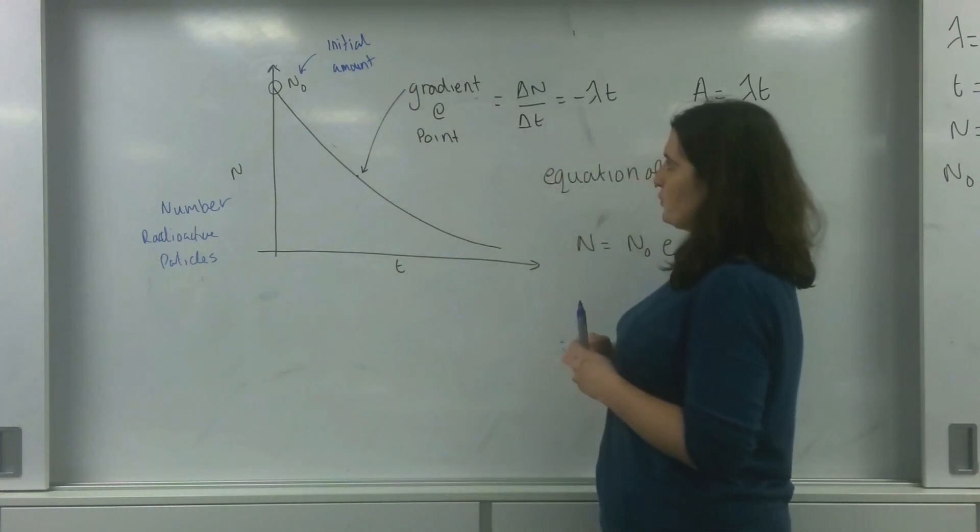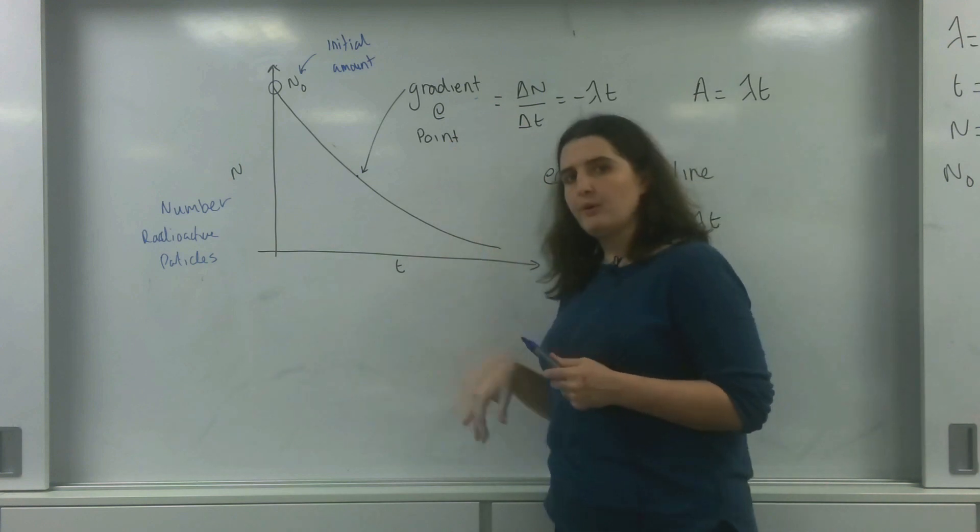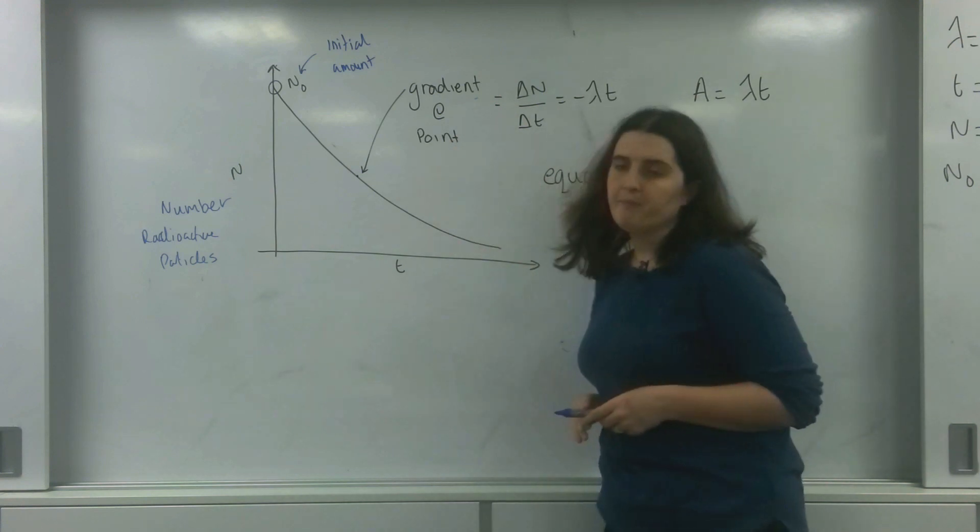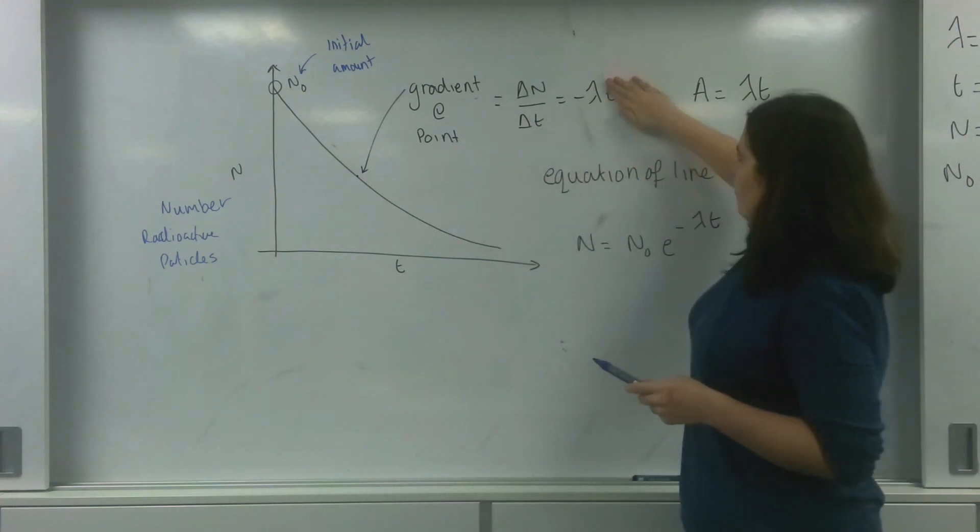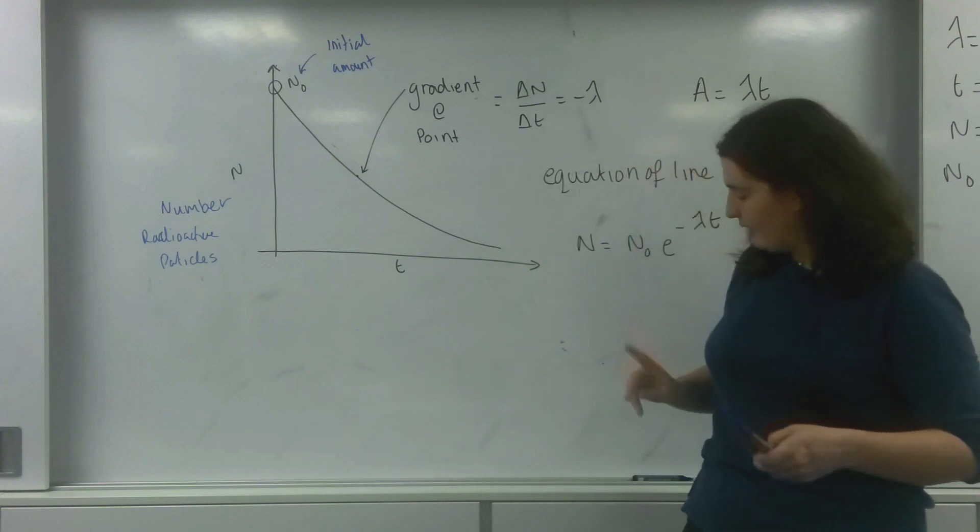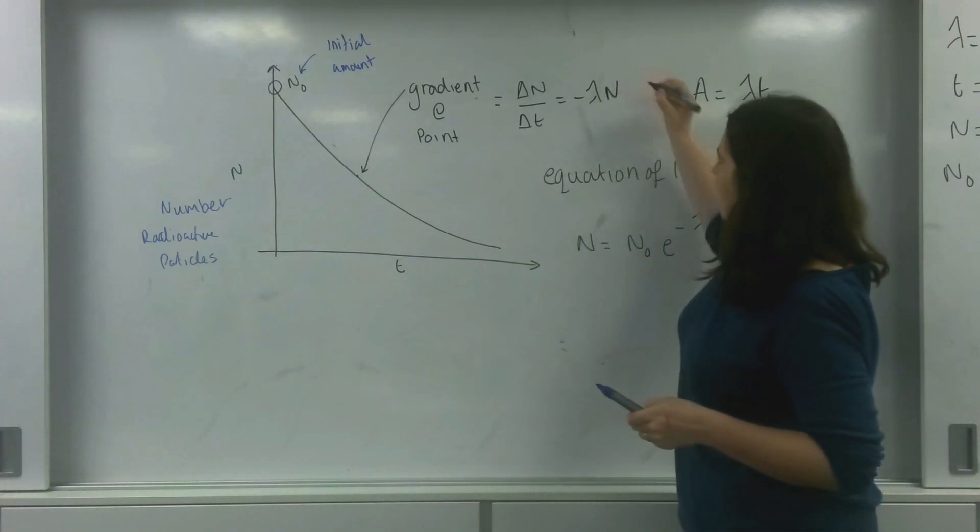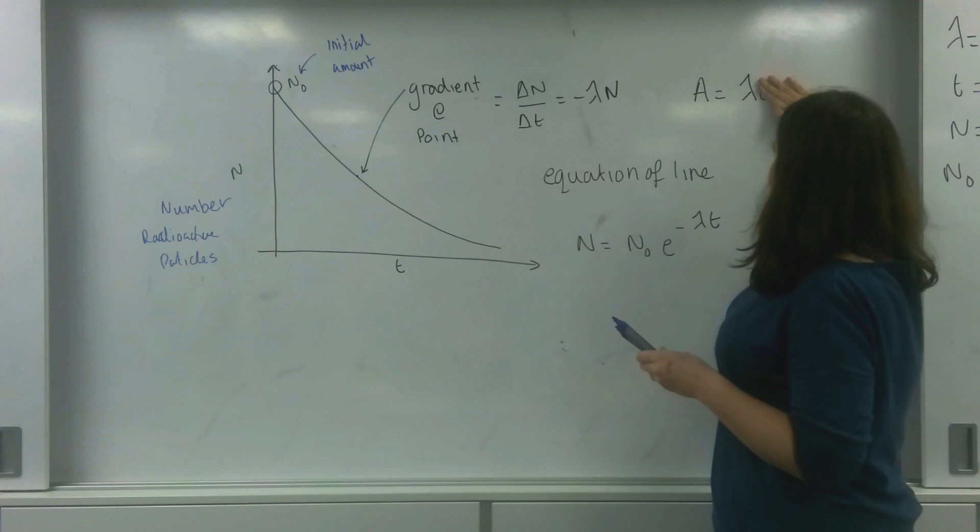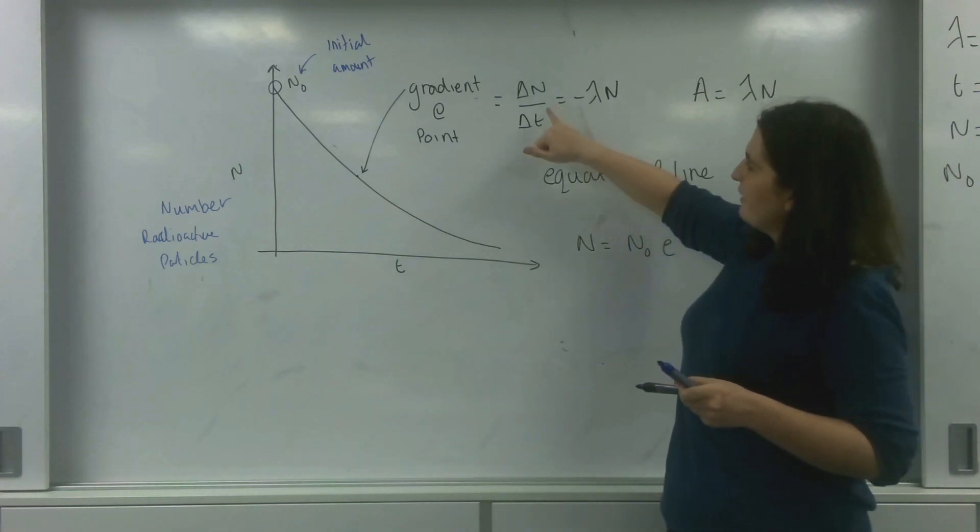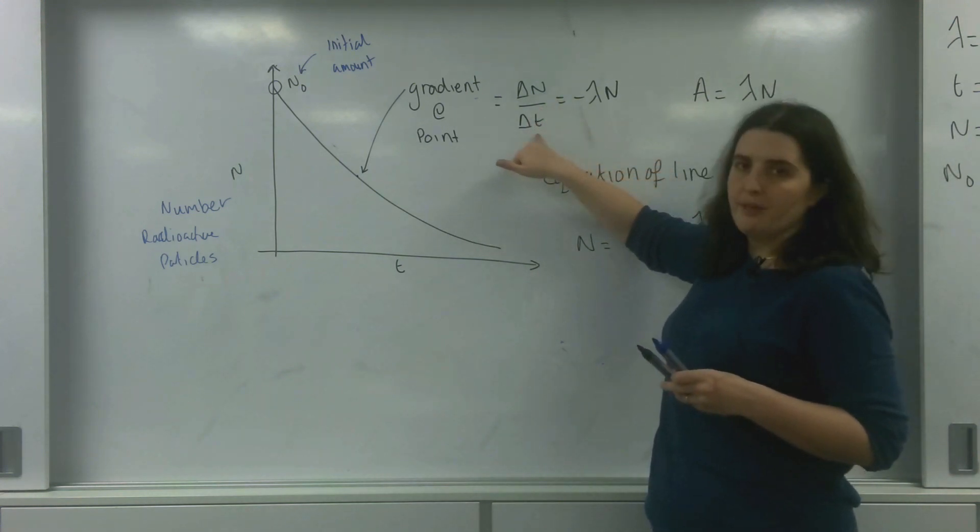In previous videos we talked about the gradient at any point. So I could take a gradient at any point. Can be related by this formula here. I made a small mistake on that one. So lambda n. That the change in n over time, the gradient at the point,